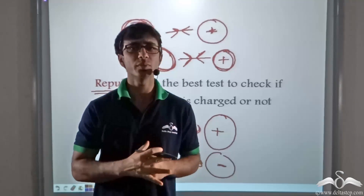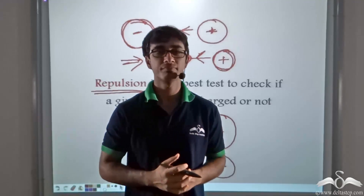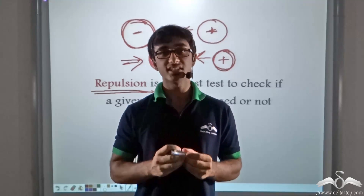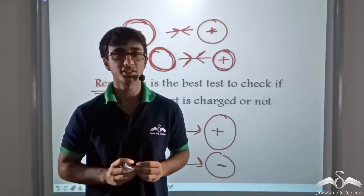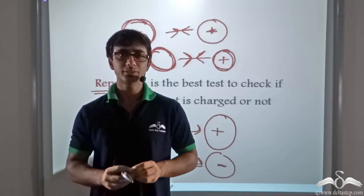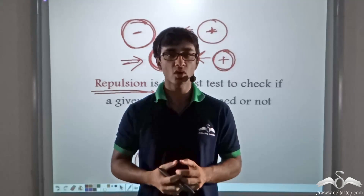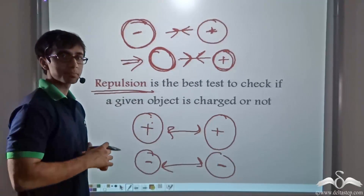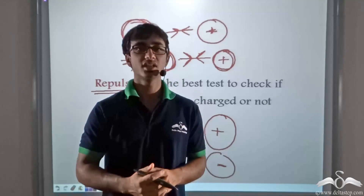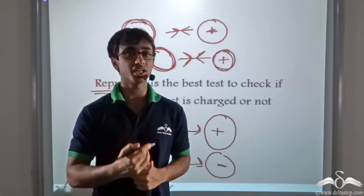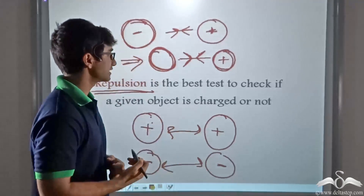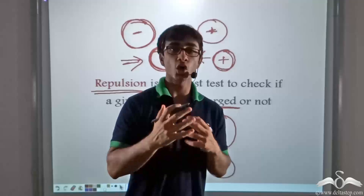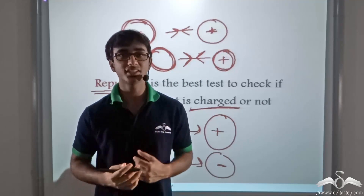Taking a quick recap: every charge has an electric field around it, and it is due to this electric field that it influences other charges in its vicinity. Every charge exerts an electrostatic force on any other charge. This electrostatic force is exerted not only on other charges but also on neutral objects. Attraction is not the best way to determine if a body is charged; repulsion is the definitive test. Electrostatic force is a non-contact force — there is no contact between the charges when the force is applied.